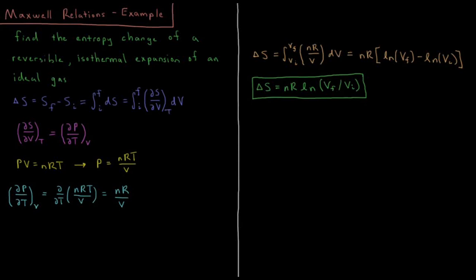This video will be an example of how to use Maxwell relations whenever we have a partial derivative show up that we don't necessarily know, but we can use it through Maxwell relations to substitute for a simpler one which we do know for our given system.